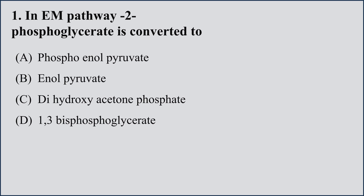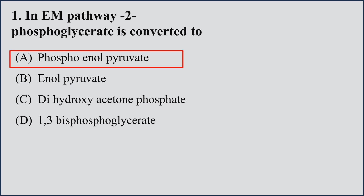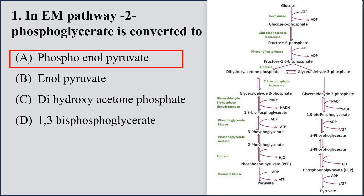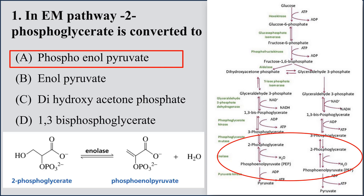The right option is A, phosphoenolpyruvate. As you can see, this is the 10-step depiction of glycolysis in which they have asked about the second last reaction, in which 2-phosphoglycerate is converted into phosphoenolpyruvate with the help of the enzyme enolase. Enolase is the enzyme which converts 2-phosphoglycerate to phosphoenolpyruvate.